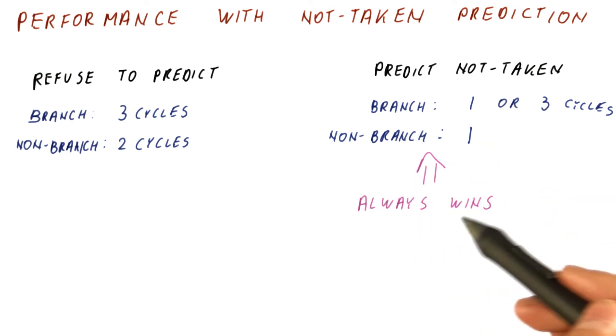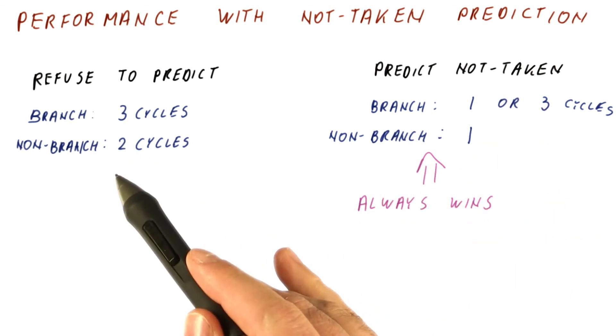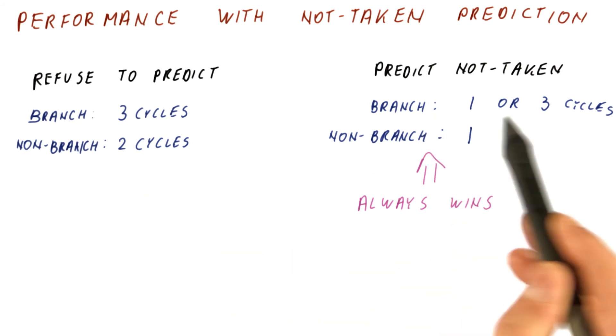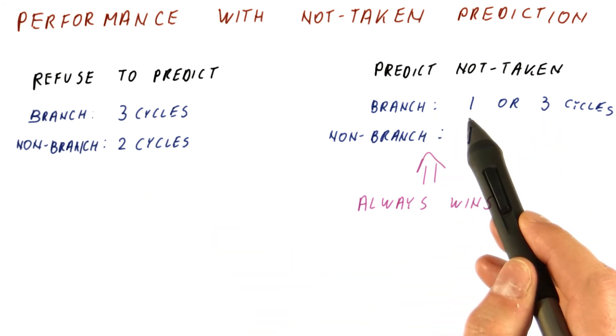So as we can see, the predict not taken always wins over refusing to predict. For non-branches, we are always one cycle better. For branches, we are either the same or two cycles better.